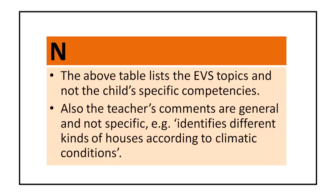The above list of EVS topics or parameters are basically EVS topics and these are not specific to the child — these are not child competencies. Teachers' comments about can do, will do with difficulty, or needs help are general and not specific. For example, 'identifies different kinds of houses according to the climatic condition' — what is this going to tell us, or tell the parents or even the child, about their assessment?